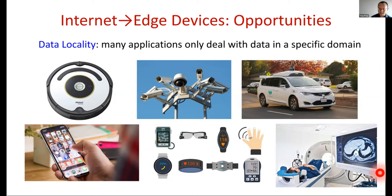Unfortunately, when we build AI systems running on edge devices today, we typically don't take advantage of this data locality property. Instead, we still largely follow the one-size-fits-all pipeline — the only difference is that instead of a single model on the cloud, we directly deploy the same model on all users' devices. I'm going to argue that this one-size-fits-all approach is becoming a bottleneck for building truly intelligent systems, and in order to truly build an intelligent AI system on the edge, we need to rethink the entire machine learning pipeline from scratch.